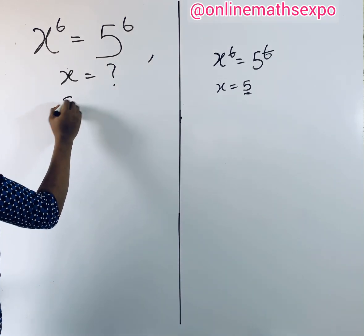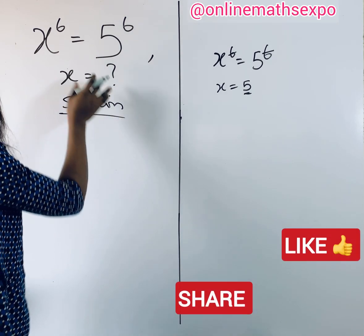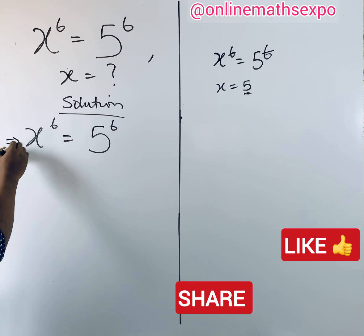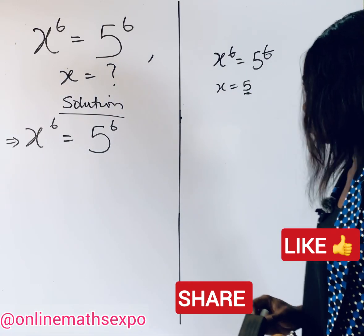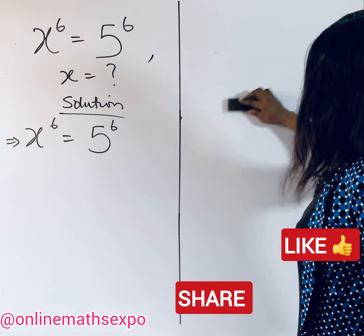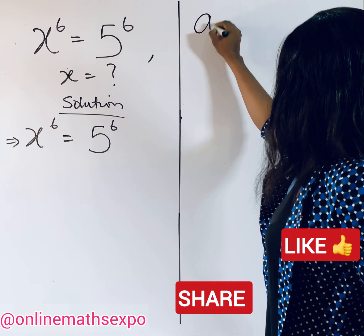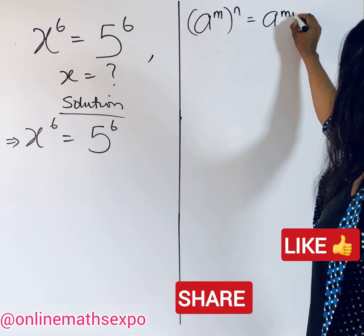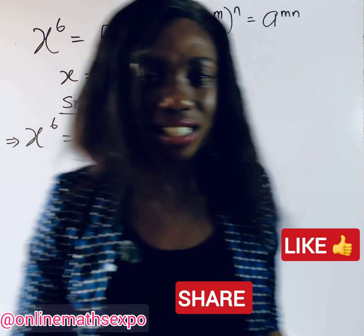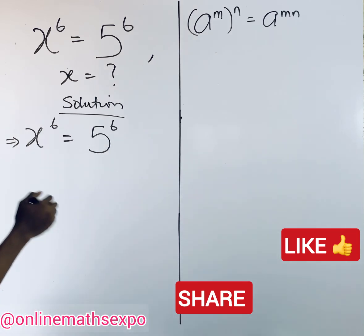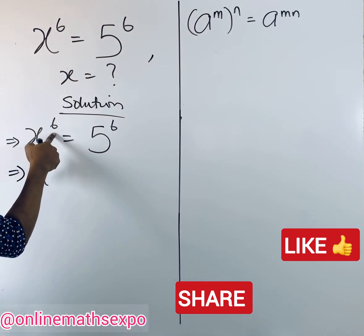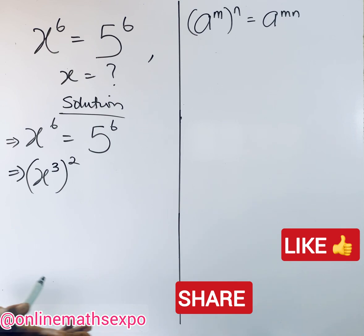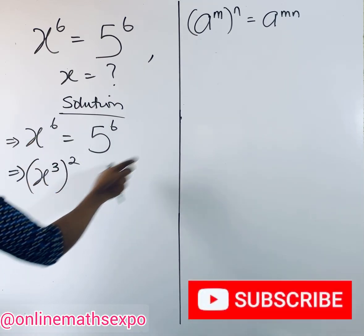So to begin, we have x to the power of 6 is equal to 5 to the power of 6. Before we answer this, let me remind you of this rule of exponents: each time you have a raised to the power of m, then raised to the power of n, you multiply the powers to get a to the power of mn. Now, x to the power of 6 can be written as x to the power of 3, raised to the power of 2 — we have not changed anything, since 3 times 2 gives 6. Similarly, 5 to the power of 6 is 5 raised to the power of 3, raised to the power of 2.